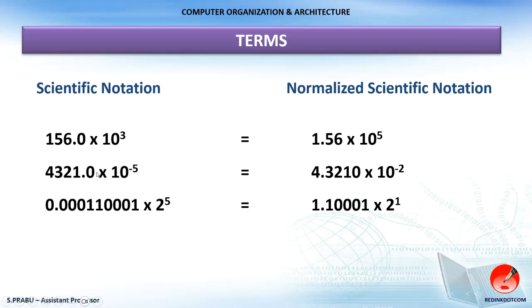In a second example, the fractional part starts further along. When we normalize, the dot is shifted three positions to the left, giving 4.3210 × 10⁻². The original value had 10 to the power of minus 5, and shifting the dot left three positions adds 10³, so minus 5 plus 3 gives minus 2. In a binary example, shifting the dot four positions to the right adds 2 to the power of minus 4, and combining with the existing exponent of 5 gives a final exponent of 1.